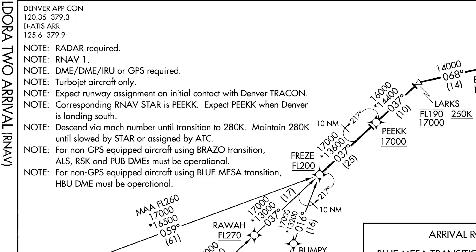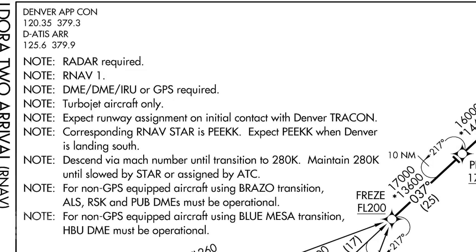The last thing we'll look at is the notes. The first three notes are similar to the SID: radar is required, this is an RNAV-1 approach, and a DME, IRU, or GPS is required to proceed. This STAR is also for turbojet aircraft only. Once you contact Denver TRACON you can expect your runway assignment. Expect PEAK when Denver is landing south, as there is another STAR named Peak 3. Descend via Mach speed until reaching the transition, at which point your descent speed should be 280 knots until ATC instructs you to lower your speed. If not equipped with GPS using the BRAZO transition, the ALS, RSK, and PUB DMEs need to be operational. If using the Blue Mesa transition without GPS, the HPU DME must be operating.